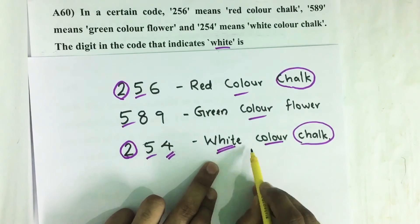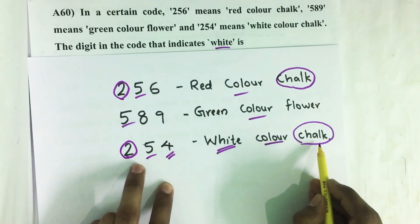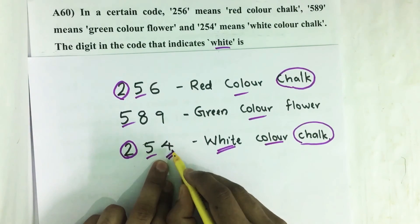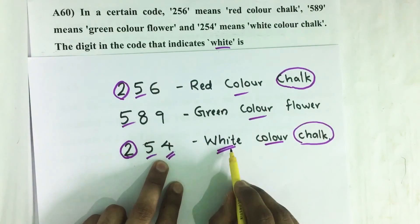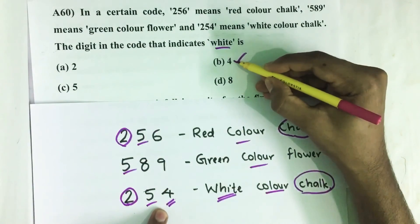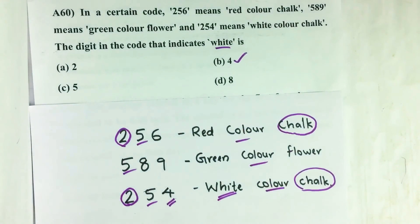Now see the third sentence: white color chalk. 'Color' is coded with 5 and 'chalk' is coded with 2. The only remaining number is 4, that means 'white' is coded with 4. Our answer is option B, 4.